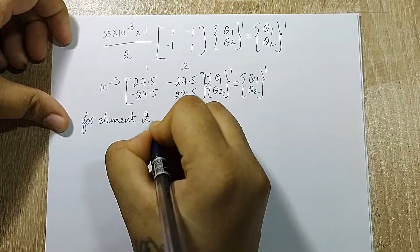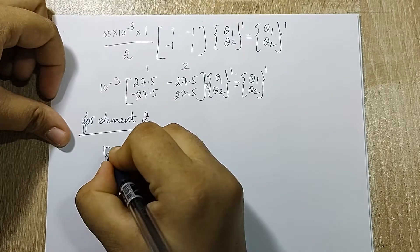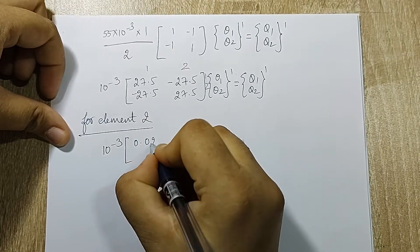Next I will go for element 2. For element 2 I get the answer as 10 raise to minus 3. I think you can write the rest of the equations.